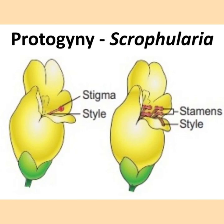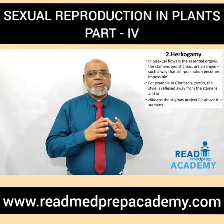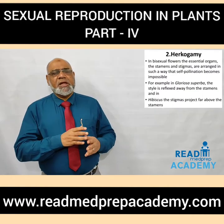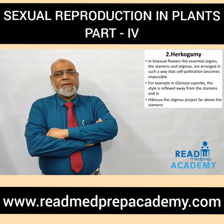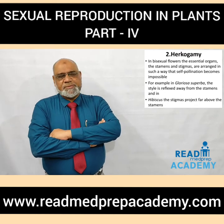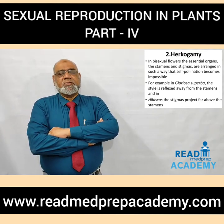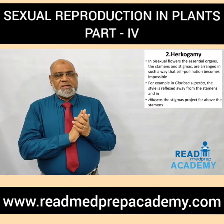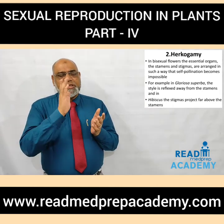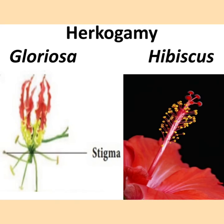What is hercogamy? In bisexual flowers, the essential organs — stamens and stigmas — are arranged in such a way that self-pollination becomes impossible. For example, in Gloriosa superba the style is reflexed away from the stamens, and in Hibiscus the stigmas project above the stamens. Here you can see on the left side the stigma which is bent and far away from the stamens in Hibiscus, and on the right side the stamens are below and the style is long with the stigma far away from the stamens.